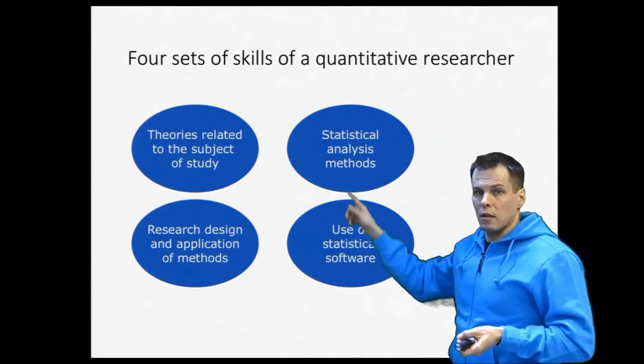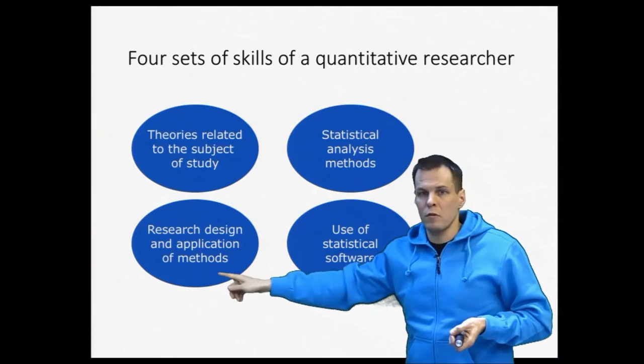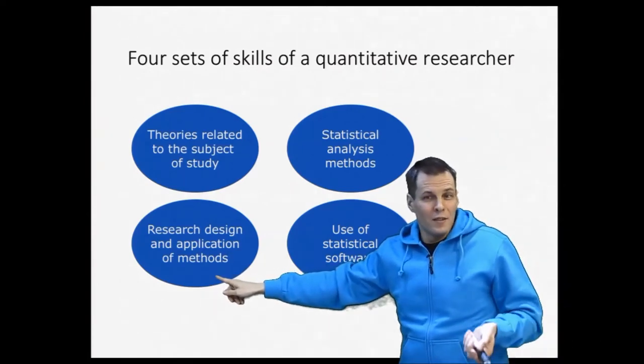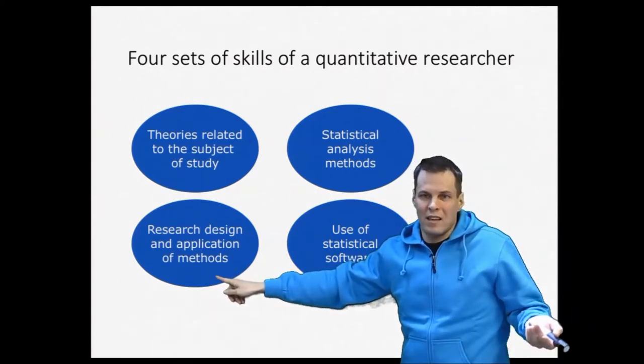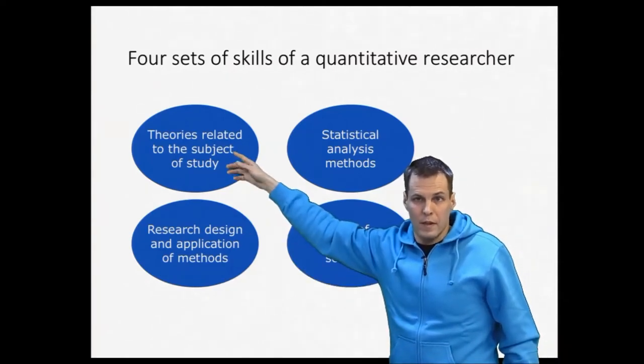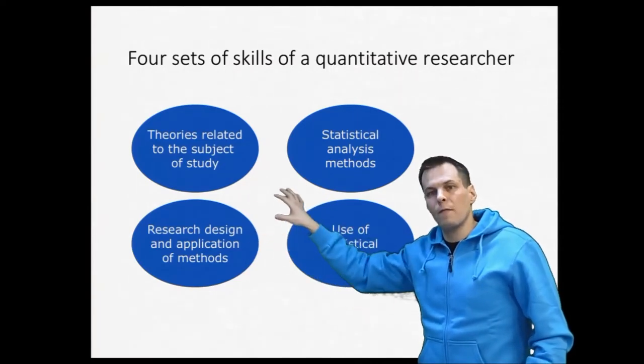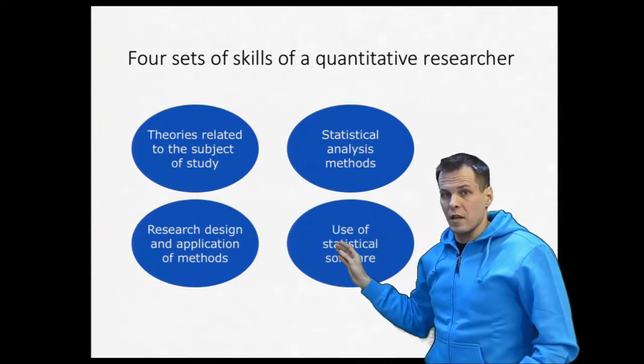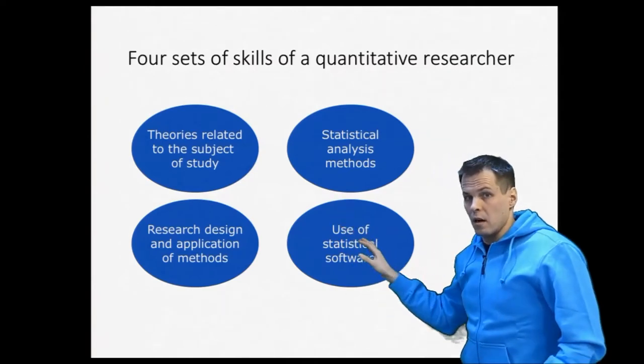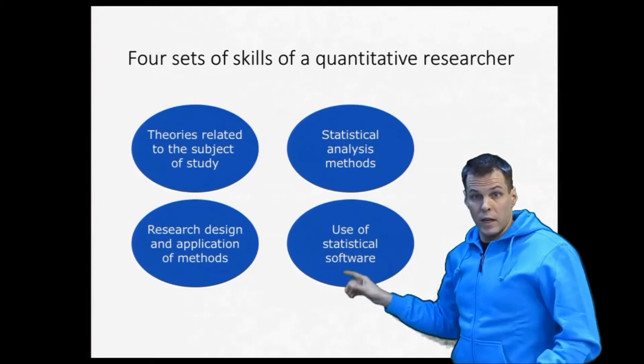If you are really good at statistical analysis methods and use of statistical software and perhaps research design, but you're weak in theory, then you can ask a colleague to help you with the theory part and then you can design the study together. So normally it's a joint effort where you have people with different kinds of skills, but generally the skill set that you need is of this area and you should understand the basics of each of these four.